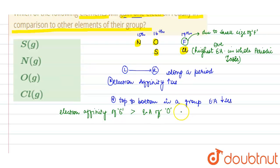Due to the small size of oxygen, the incoming electron will suffer some inter-electronic repulsion. That's why its electron affinity decreases. So your answer will be first option sulfur and fourth option chlorine. First and fourth will be your answer.